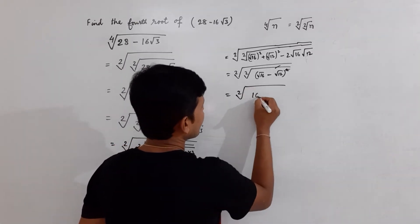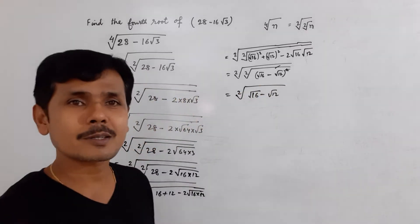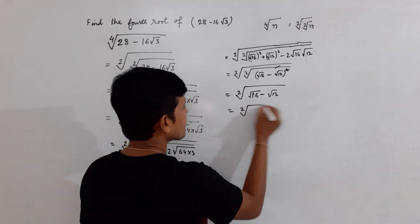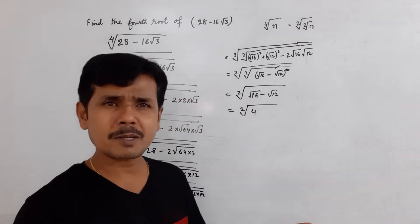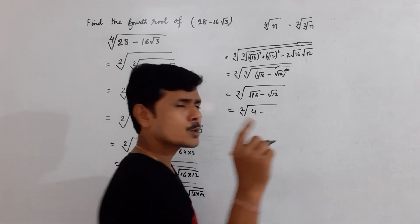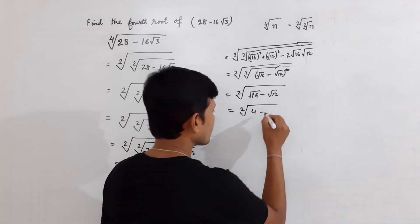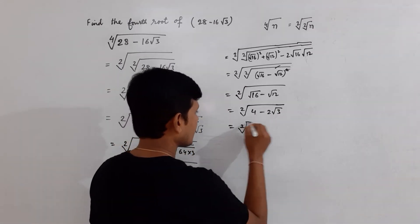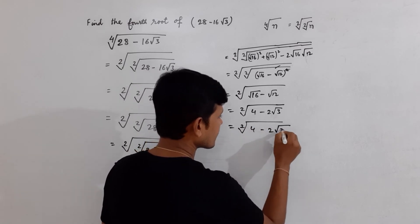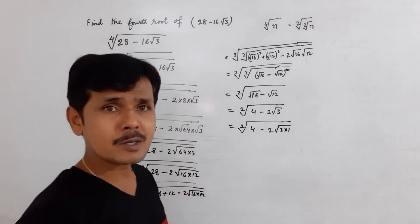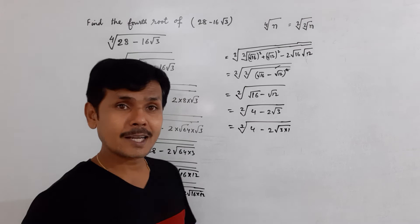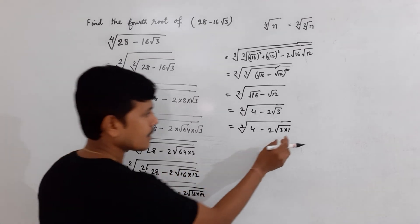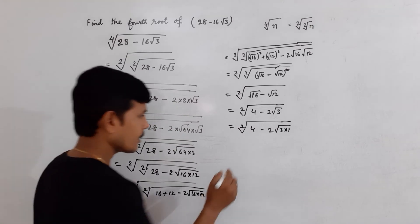But we are still inside one more square root, so we have to get rid of this one too. The result of the first square root is 4 minus 2 times square root of 3, since square root of 16 equals 4 and square root of 12 equals 2 root 3. Now using the same analogy: I write 2 root 3 as 2 times square root of 3 times square root of 1, because 3 plus 1 equals 4, just as 16 plus 12 equaled 28.